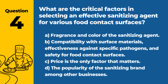Question 4. What are the critical factors in selecting an effective sanitizing agent for various food contact surfaces? a. Fragrance and color of the sanitizing agent. b. Compatibility with surface materials, effectiveness against specific pathogens, and safety for food contact surfaces. c. Price is the only factor that matters. d. The popularity of the sanitizing brand among other businesses. Answer: b. Compatibility with surface materials, effectiveness against specific pathogens, and safety for food contact surfaces. Selecting the right sanitizing agent is vital for maintaining a safe food preparation environment.